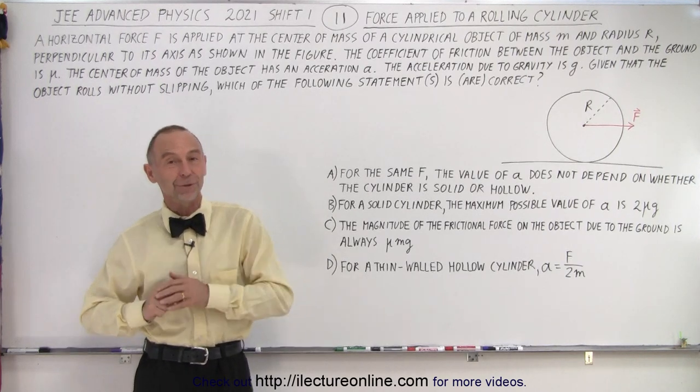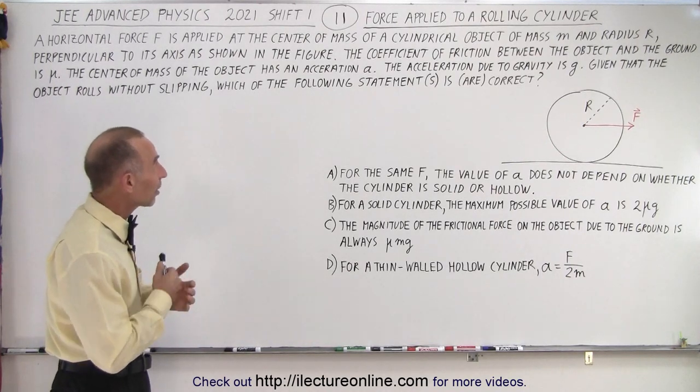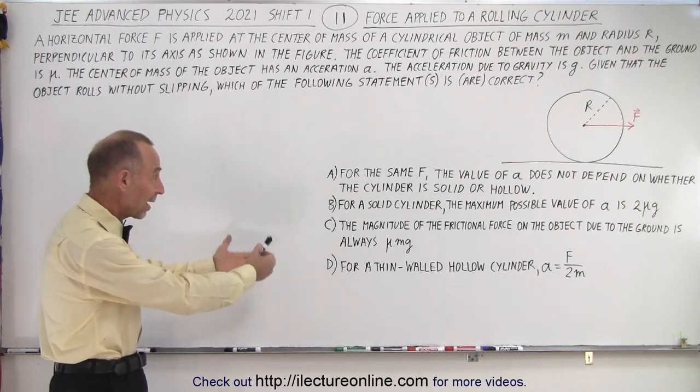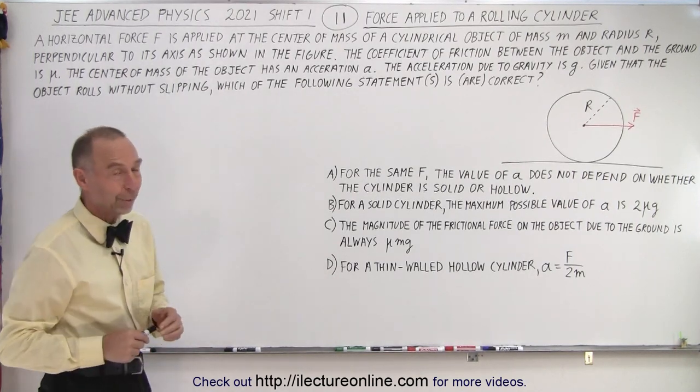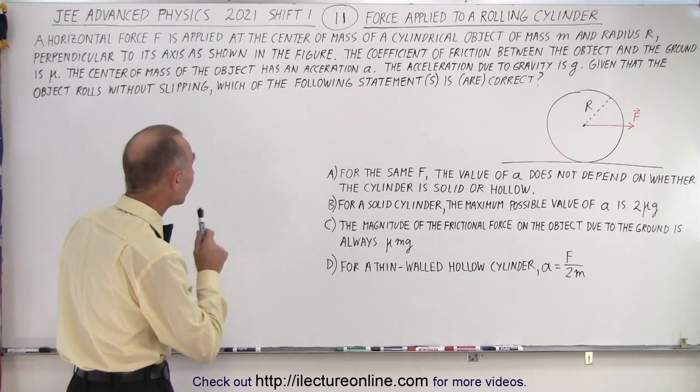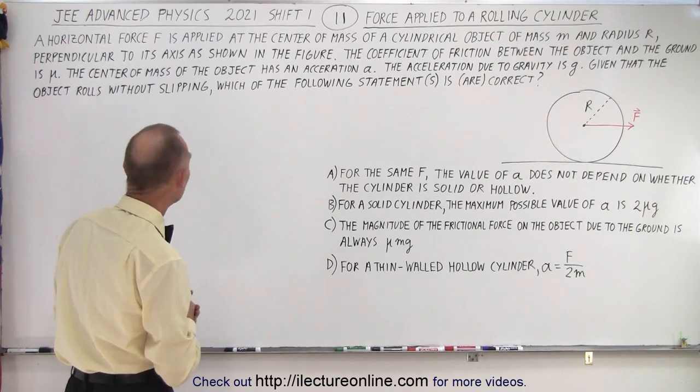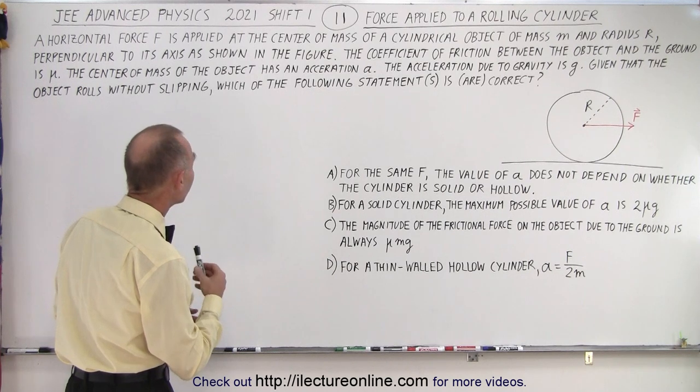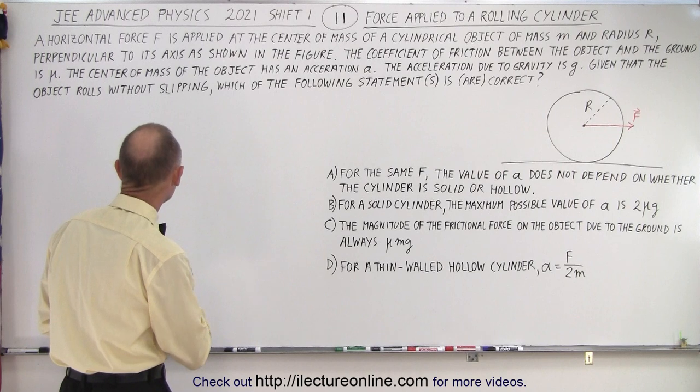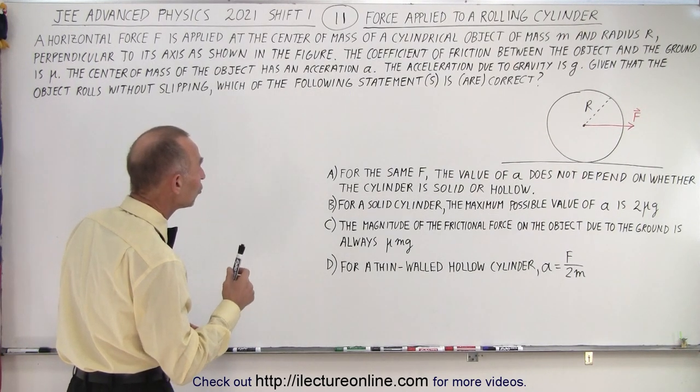So here we are, number 11 in the set that was given on the first shift. It talks about a force applied to a rolling cylinder, so let's read the problem and see if we can figure out which of these four answers are the correct ones. A horizontal force F is applied at the center of mass of a cylindrical object of mass M and radius R perpendicular to its axis as shown in the figure. The coefficient of friction between the object and the ground is mu. The center of mass of the object has an acceleration A. The acceleration due to gravity is G.